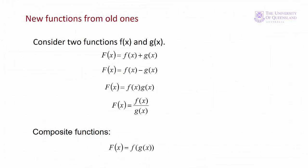There are various ways in which we can combine functions. For example, if we have two functions, f of x and g of x, we can add them together, subtract them, multiply them, or form a ratio. We can also have functions of functions.